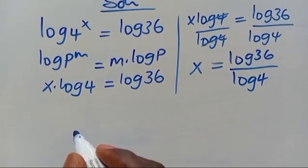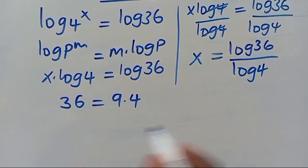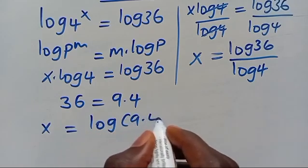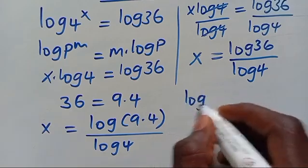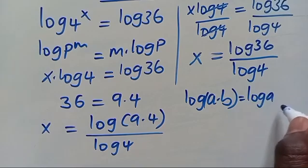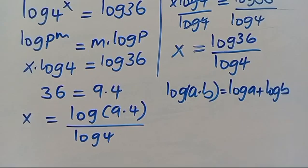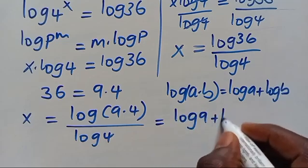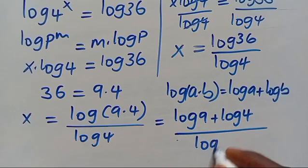From here, we note that we can write 36 as 9 times 4. So when we substitute it, we have x equals log(9 times 4) divided by log 4. We recall that log(a times b) equals log a plus log b, so we can simplify this to be log 9 plus log 4, all divided by log 4.